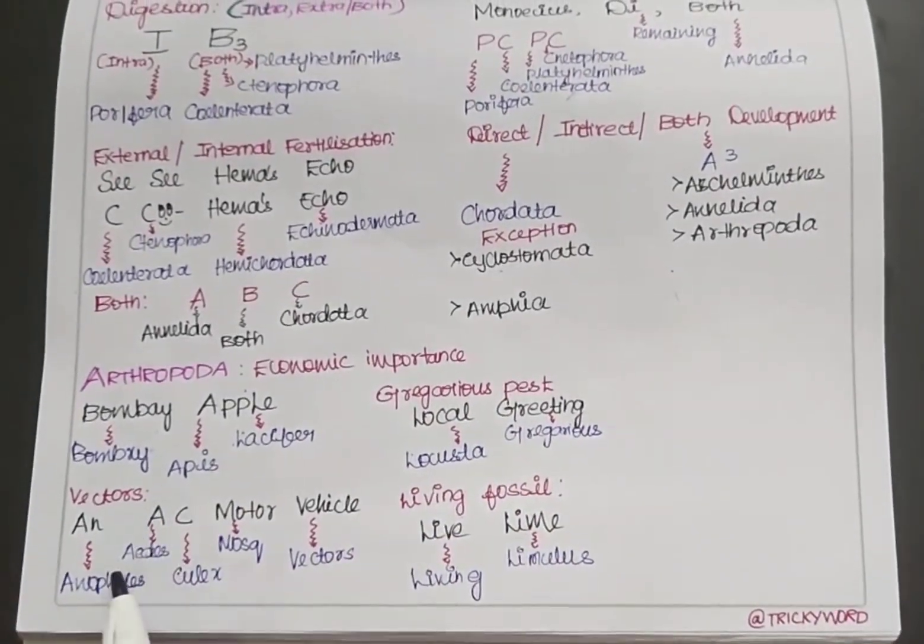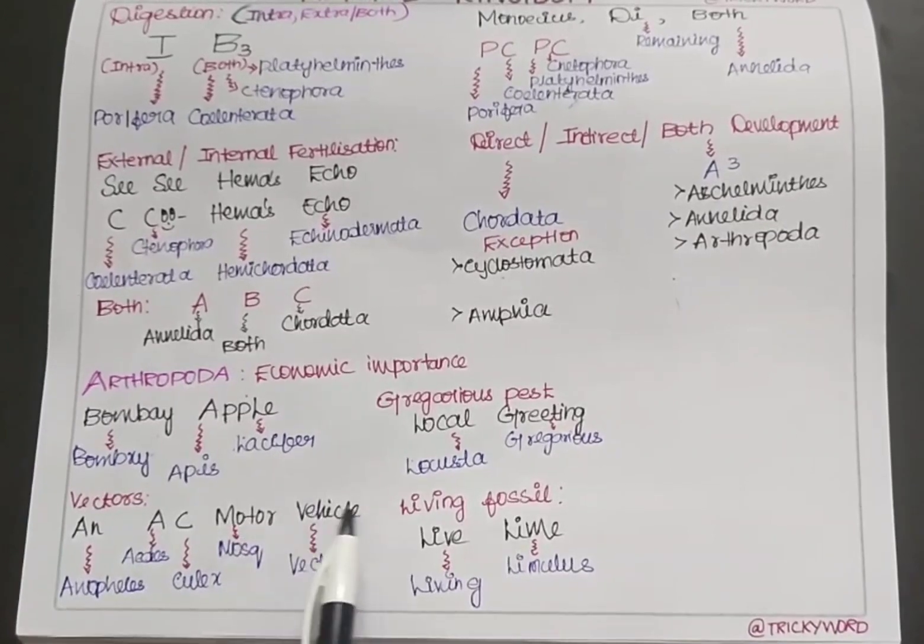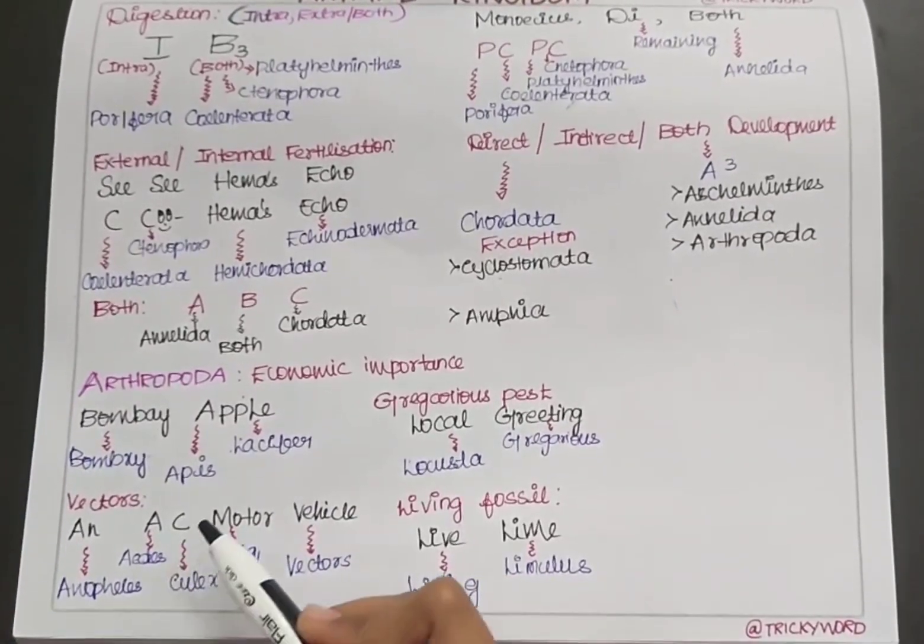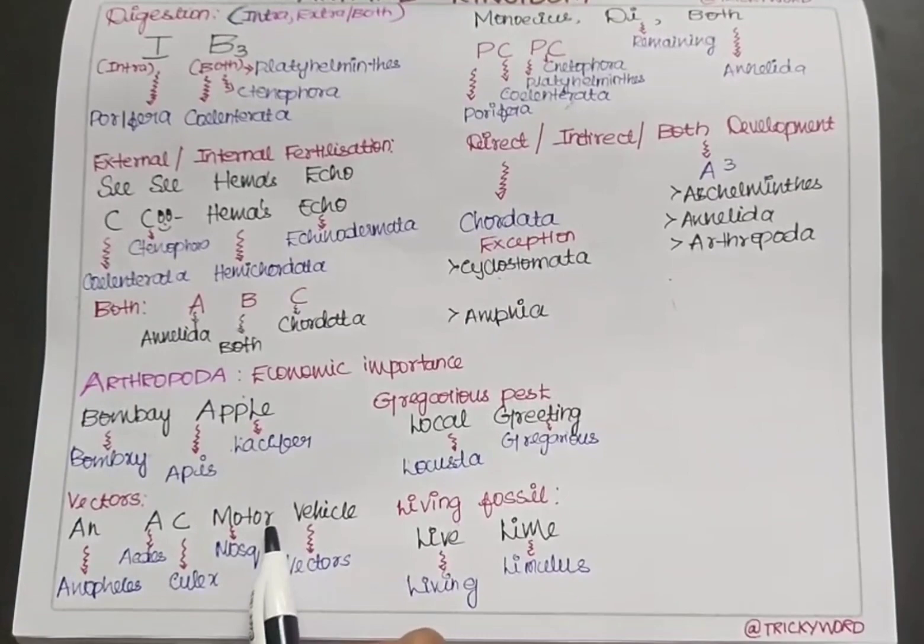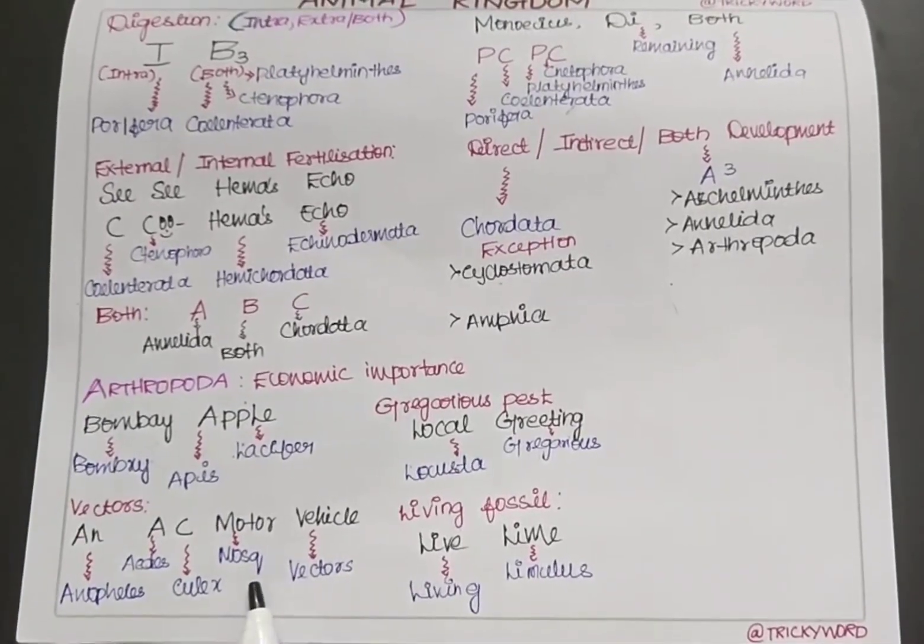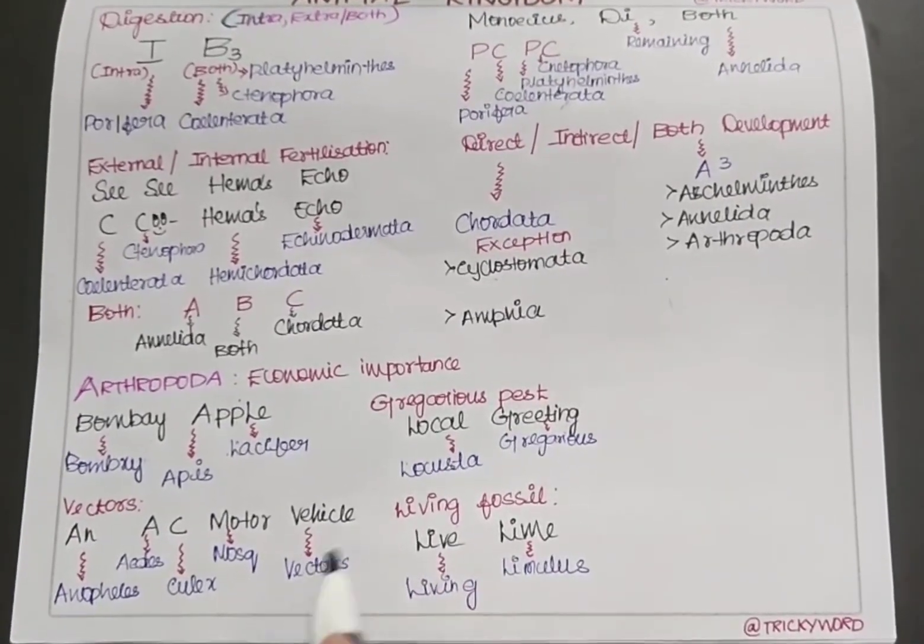For vectors, we have the mnemonic 'An AC Motor Vehicle'. An is for Anopheles, A is for Aedes, C is for Culex. Motor stands for mosquitoes - these are all mosquitoes. V, or vehicle, is for vector.